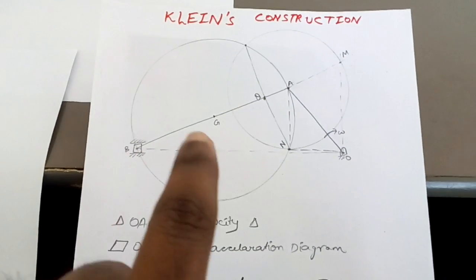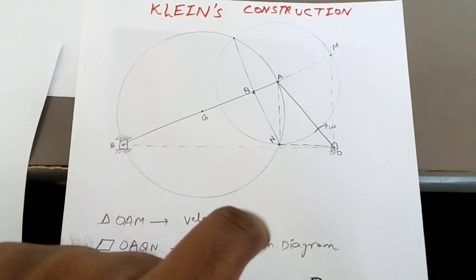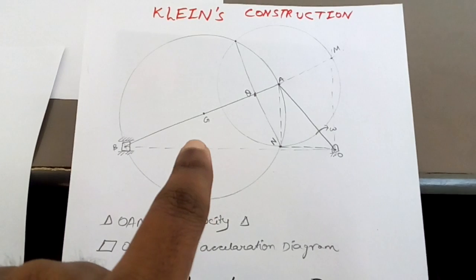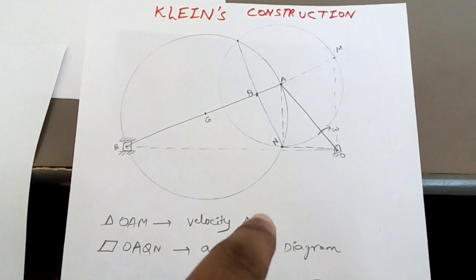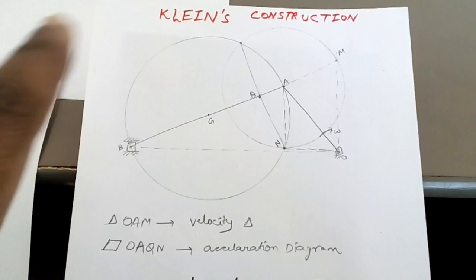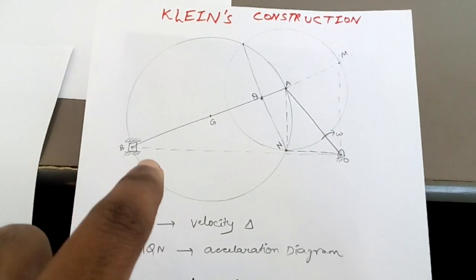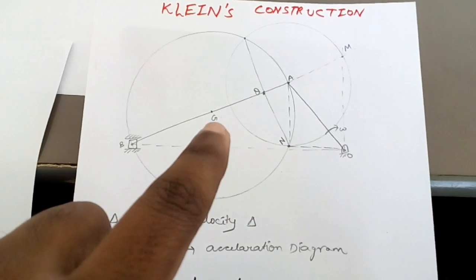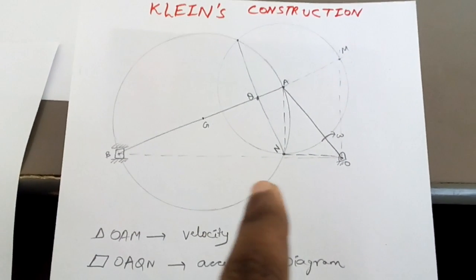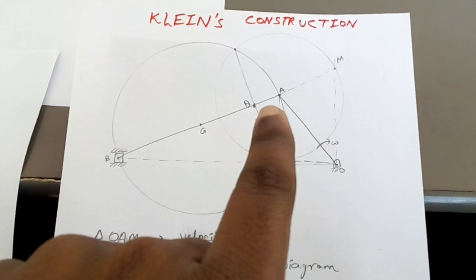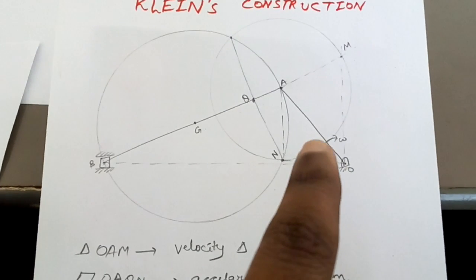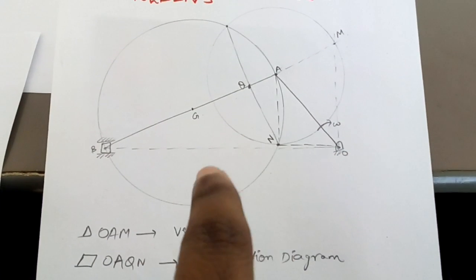First you have to make this mechanism as per the dimensions given. Then you have to take the midpoint of AB — that is, the midpoint of the connecting rod — and make a circle with radius equal to BG or AG, with center G. You will make this big circle. Also, project the point of intersection of the connecting rod and the crank.